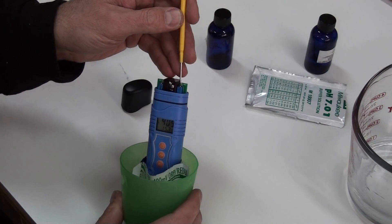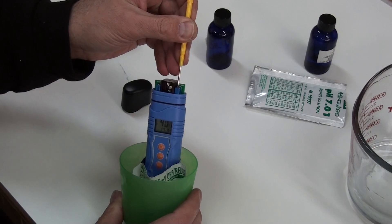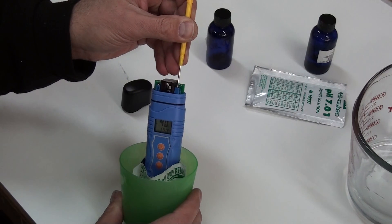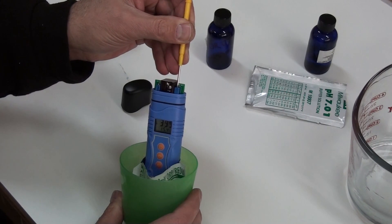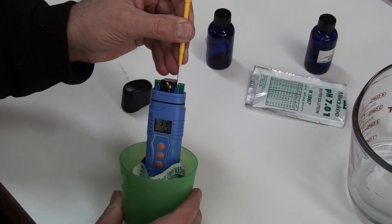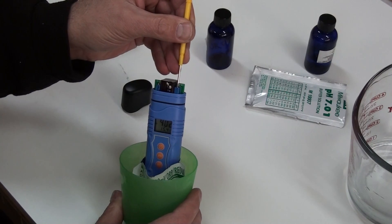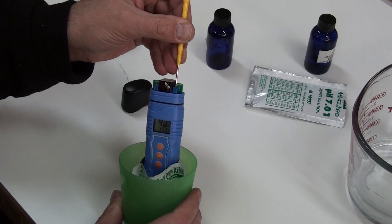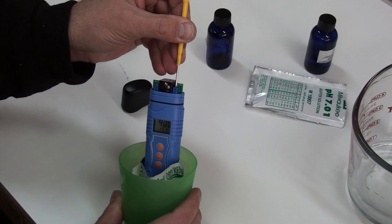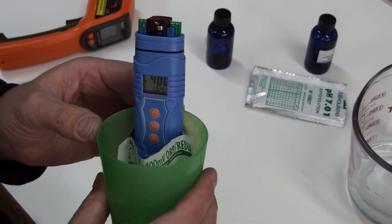We'll turn this down to 400 millivolts. Hold this. Let it settle down. Okay, we've got 400 right there and that's considered calibrated.